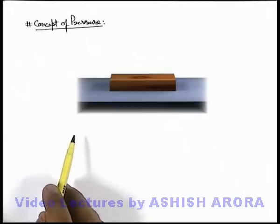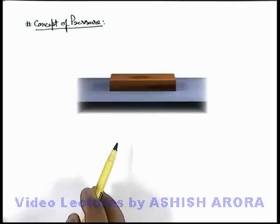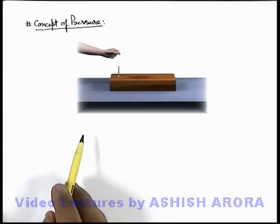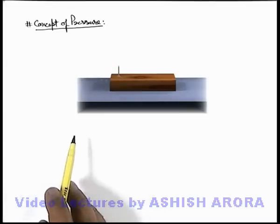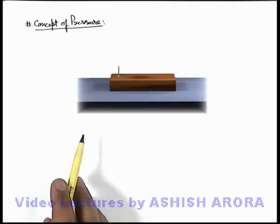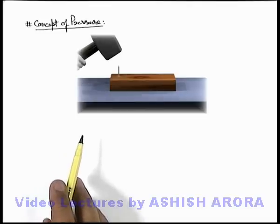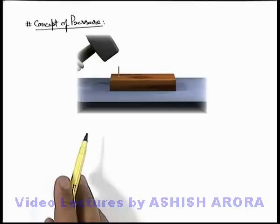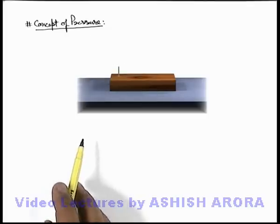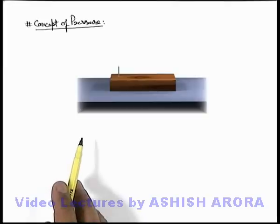Here you can see this is a wooden block, on which we place a nail with its head in the downward direction, and we try to hit the nail on its pointed end with the help of a hammer. We can see that even after hitting it several times, the nail will not penetrate into the wooden block because the flat head of the nail is placed on the wood.